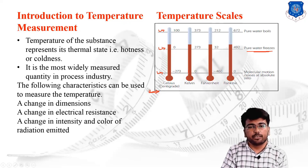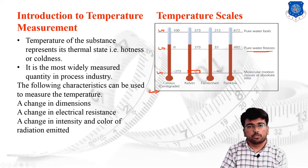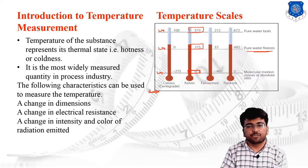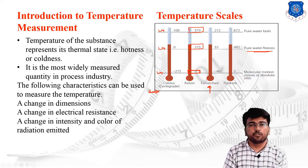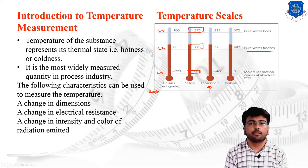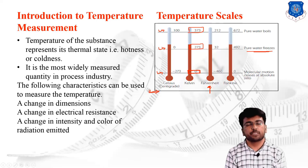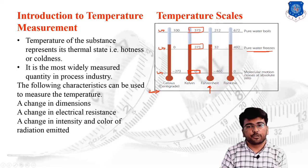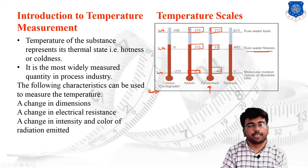The absolute zero condition is defined by the Kelvin scale. When Kelvin achieves zero value, that is the absolute zero condition. The freezing point in the Kelvin scale is 273 Kelvin and the boiling point is 373 Kelvin. The next scale is the Fahrenheit scale, which is generally useful for medical science. In the Fahrenheit scale, the ice point of water is 32 Fahrenheit, the boiling point is 212 Fahrenheit, and the absolute zero condition is minus 460 Fahrenheit.